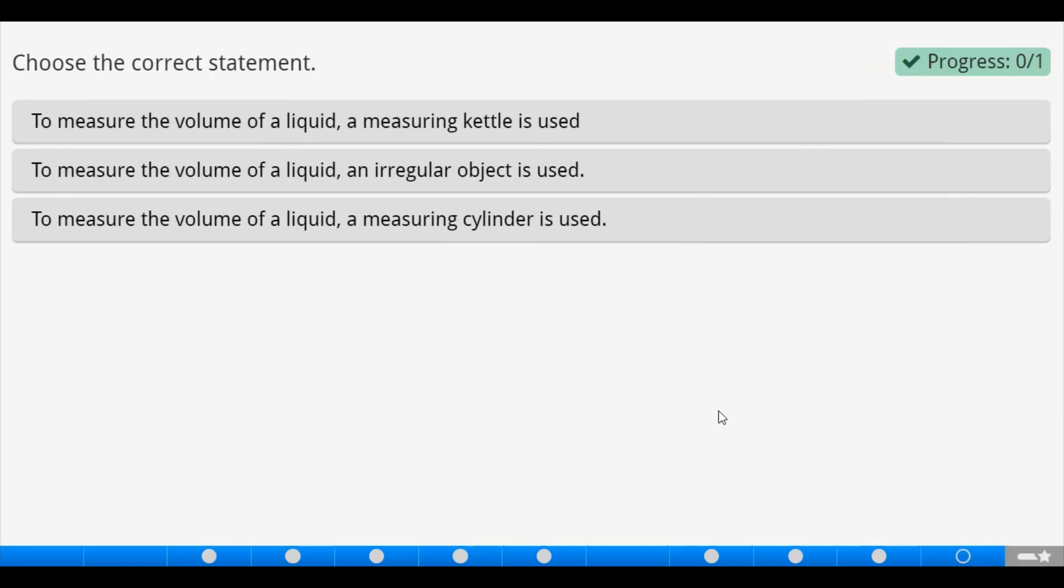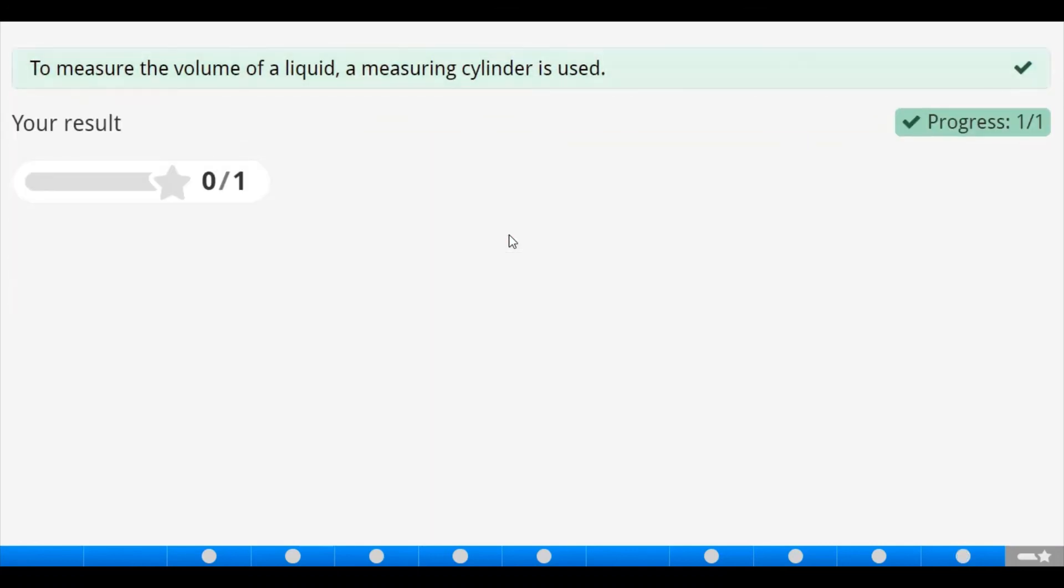Now, we are also to choose the correct statement from what we have here. To measure the volume of a liquid, a measuring kettle is used. No. Kettles are used in homes. Not in the laboratories. To measure the volume of a liquid, an irregular object is used. Not at all. To measure the volume of a liquid, a measuring cylinder is used. This is correct. To be able to determine the length, the breadth and the height of the liquid. So, let's pick it and check. That is correct. With this, we've come to the end of this session.